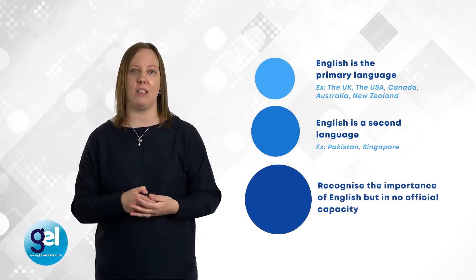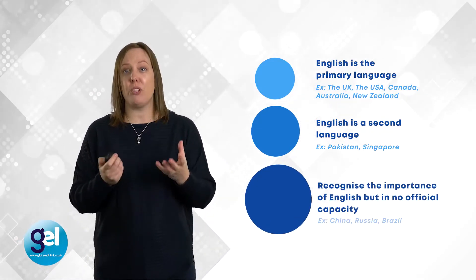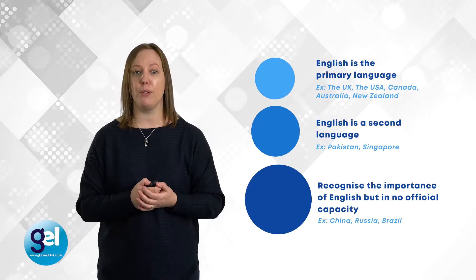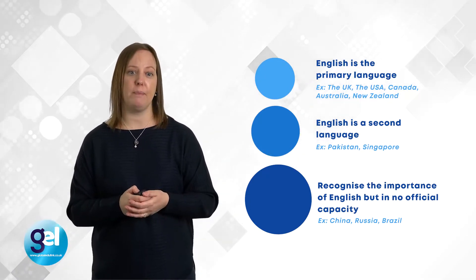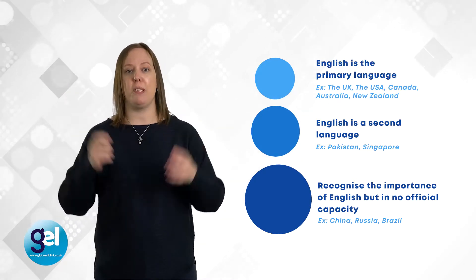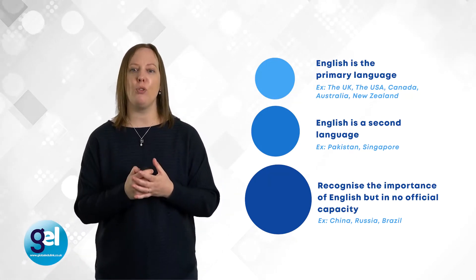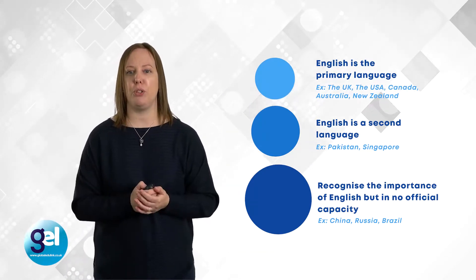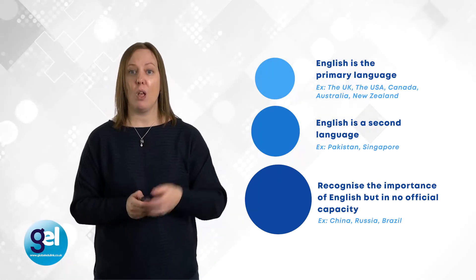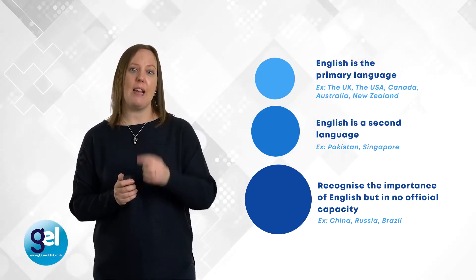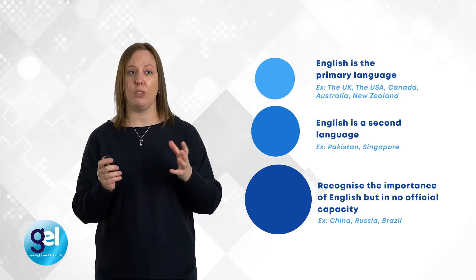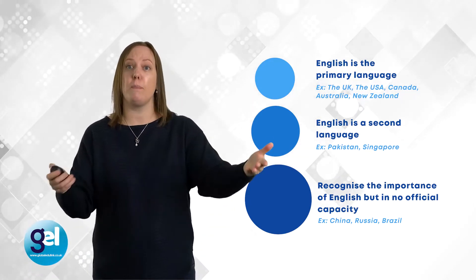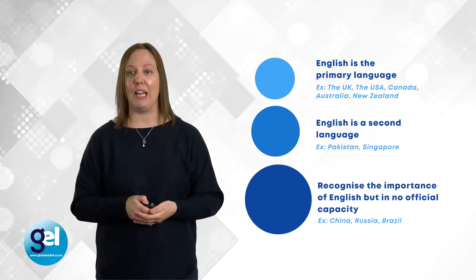The expanding circle recognises the importance of English but in no official capacity — examples include China, Russia and Brazil. These countries are norm-dependent: they fully depend on the norms originally produced by native speakers in the inner circle and don't reproduce new varieties of English. One point to consider is that the inner, outer and expanding circles may change over time — particularly the outer and expanding circles as the influence of English evolves.